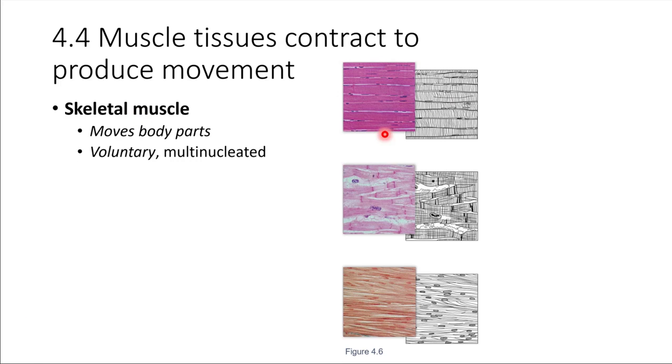This is what skeletal muscle looks like. It has a pretty characteristic appearance. And the cells, we say that they are multinucleated. What happens actually is we start off with a bunch of individual cells, and then during development, early on in development, those cells fuse together.